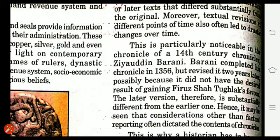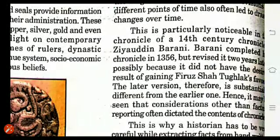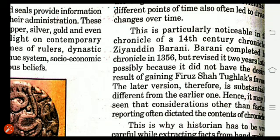These changes can be easily noticed in the chronicle written by Ziauddin Barani. Barani completed his chronicle in 1356, but revised it two years later, possibly because he did not achieve the desired result of gaining Feroz Shah Tughlaq's favour. After completing his chronicle in 1356, he revised it, and the later version is therefore substantially different from the earlier one — resulting in two versions.